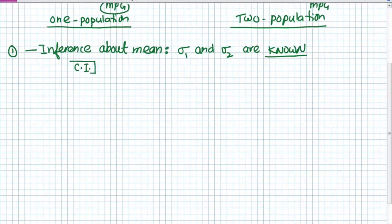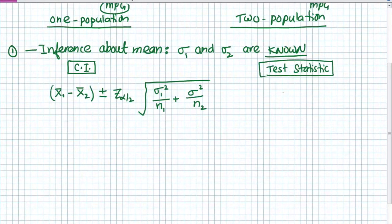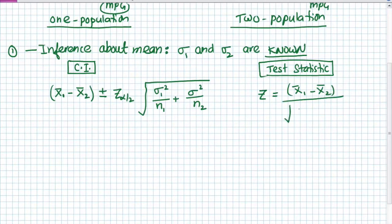The confidence interval formula is an extension of what we had done earlier with one population: x-bar 1 minus x-bar 2, plus or minus z alpha by 2, times the square root of sigma 1 squared divided by n1 plus sigma 2 squared divided by n2. When sigma is known, we use the normal distribution. For the test statistic, we use z, which is x1-bar minus x2-bar divided by the square root of sigma 1 squared over n1 plus sigma 2 squared over n2.